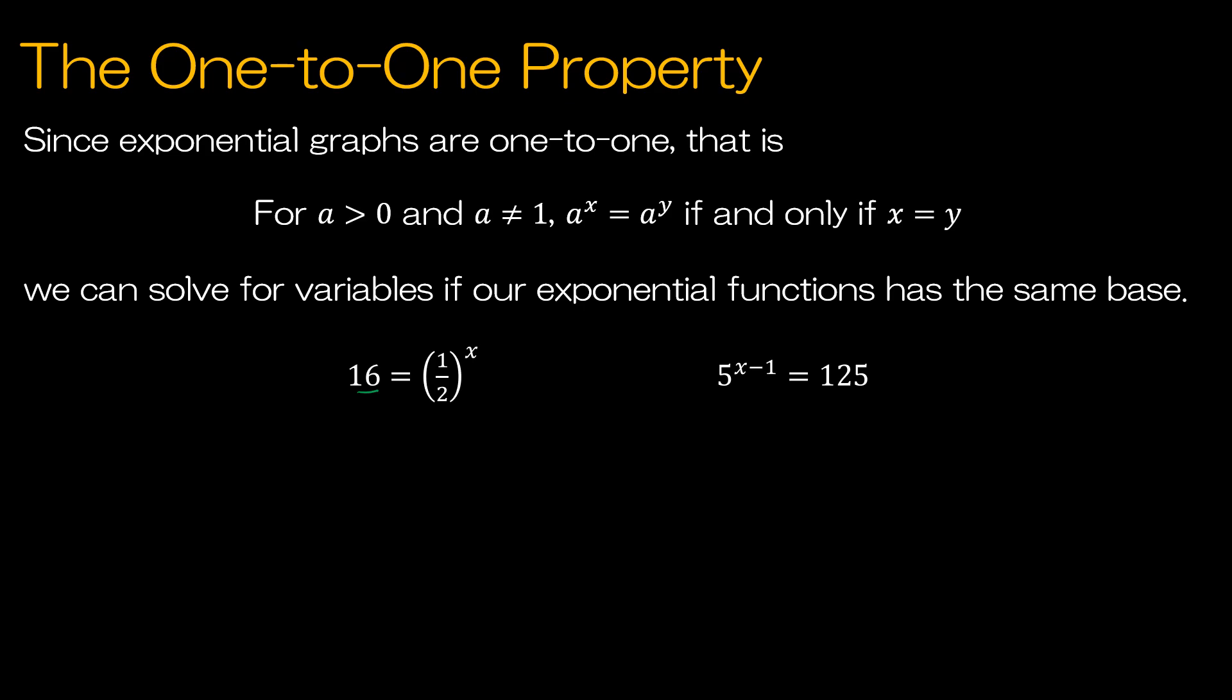So 16 is the same as four squared, but four can actually be broken down into two times two. So 16 is two to the fourth power. Two times two is four times two is eight times two is 16. Now we talked about the fact that one half was the same as two to the negative one. It's the reciprocal of two, which means what I have is actually two to the fourth is equal to two to the negative x power. Because negative one times x, we're going to multiply those exponents. That means I can solve by setting the exponents equal to one another to get that negative four is equal to x.